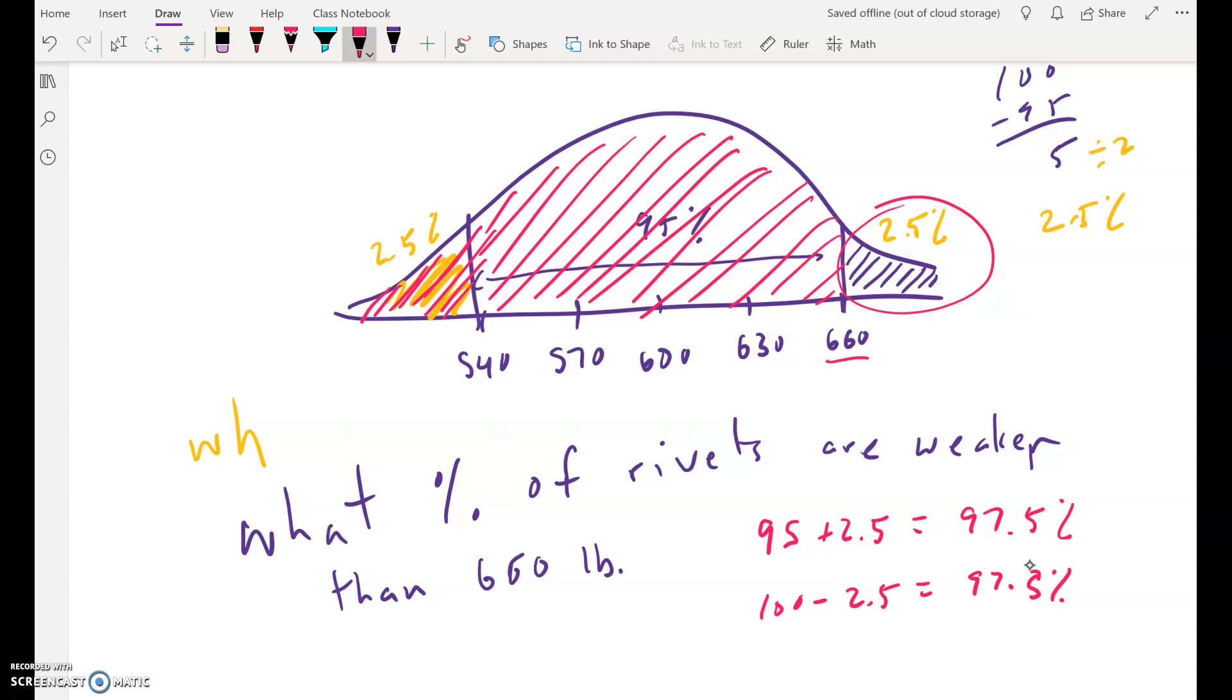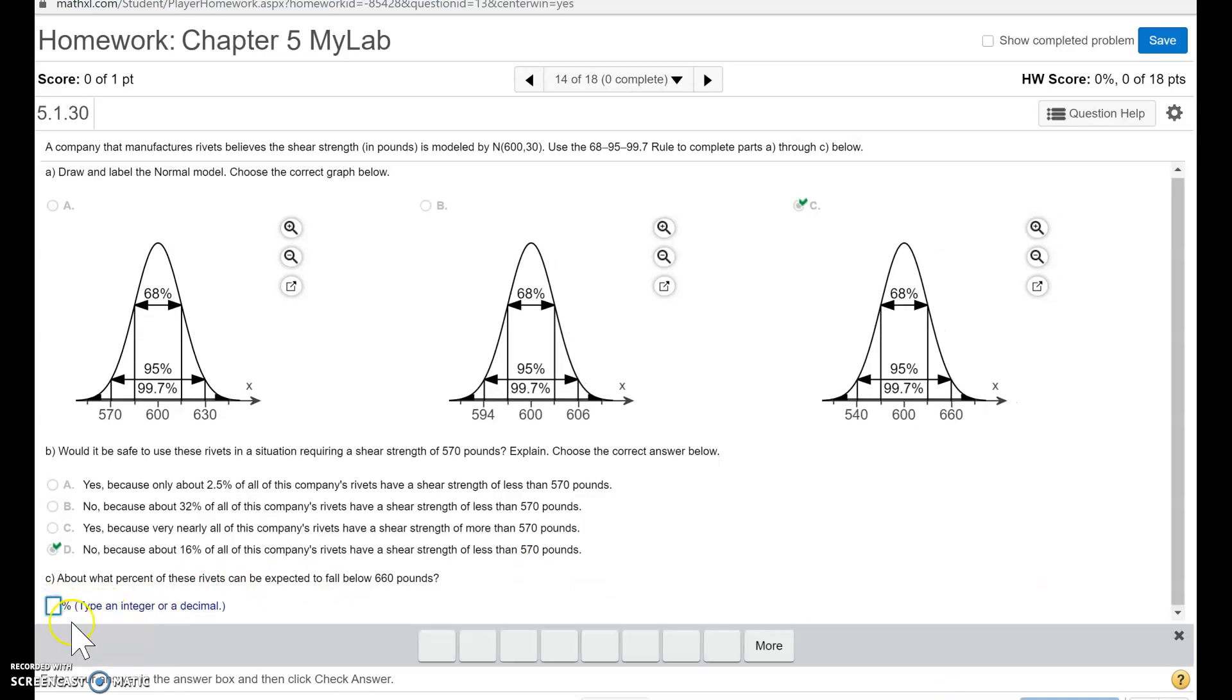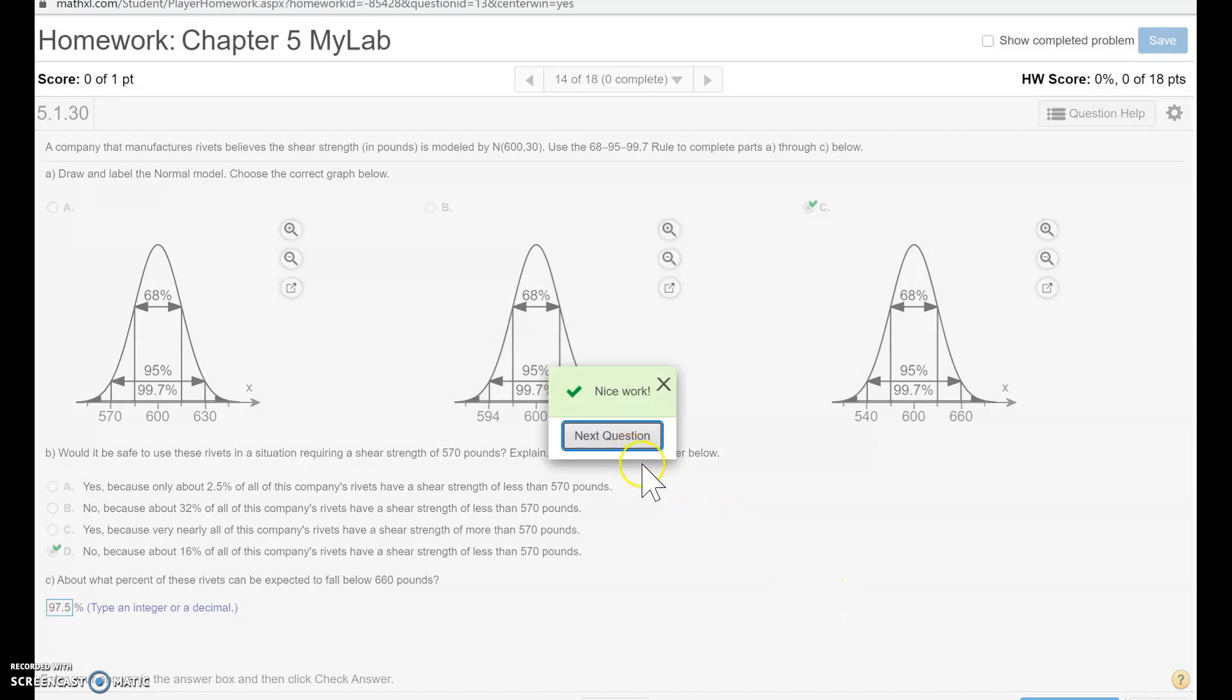Okay, back to the question. So now we know the answer is 97.5%. So just type it in. Now, it says type an integer or decimal. Now there's percentage sign, so you have to write 95 points, 97.5%. And then check answer. And it's, it's good. All right. And that is it.